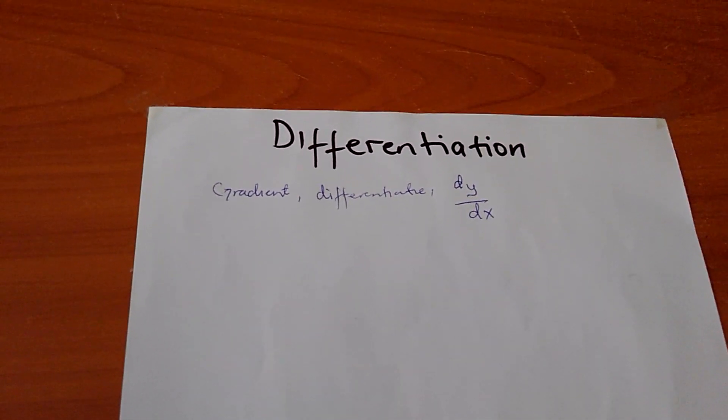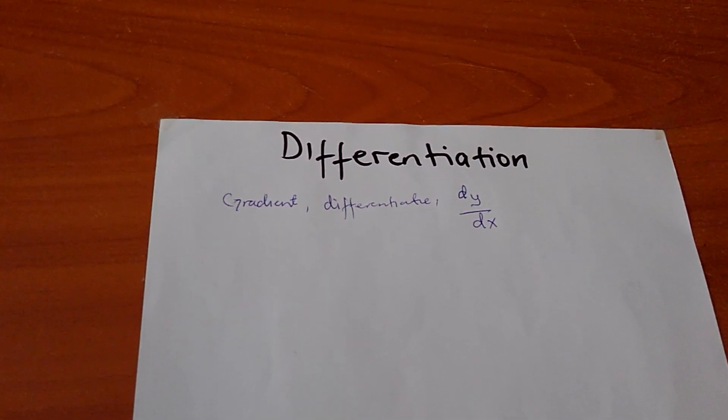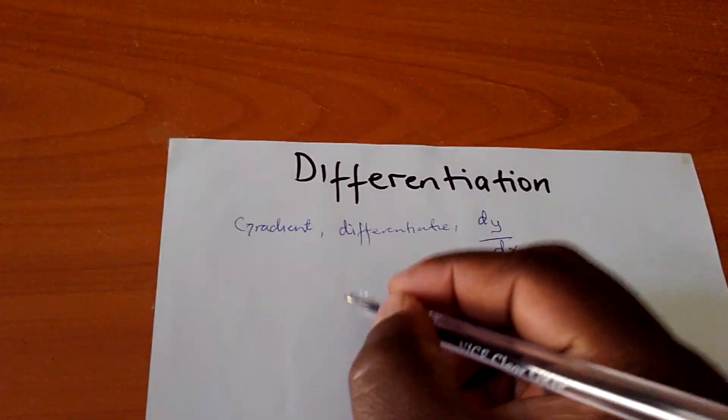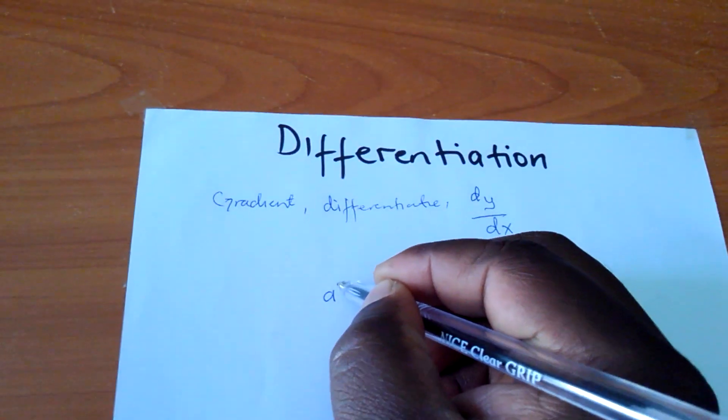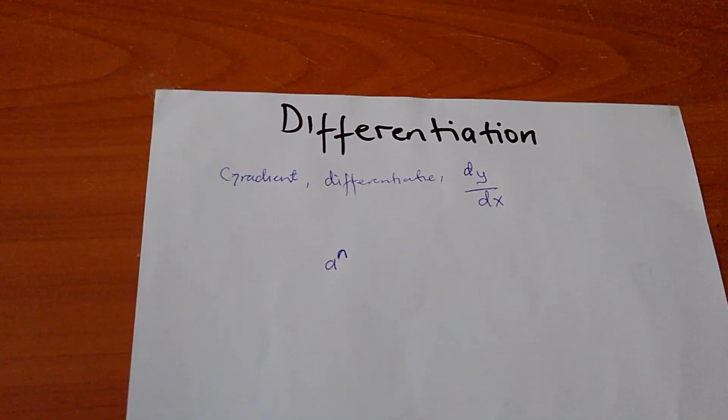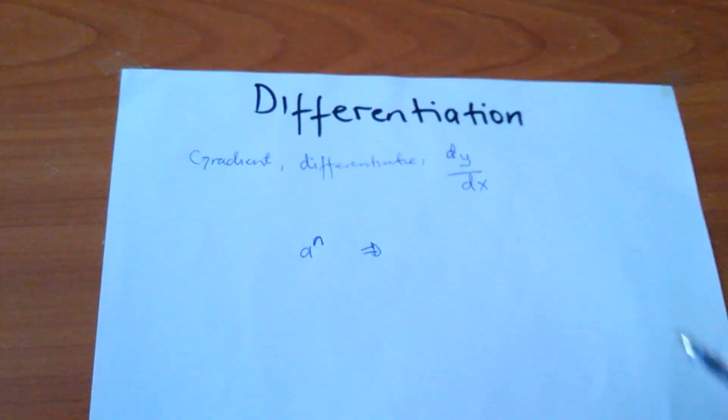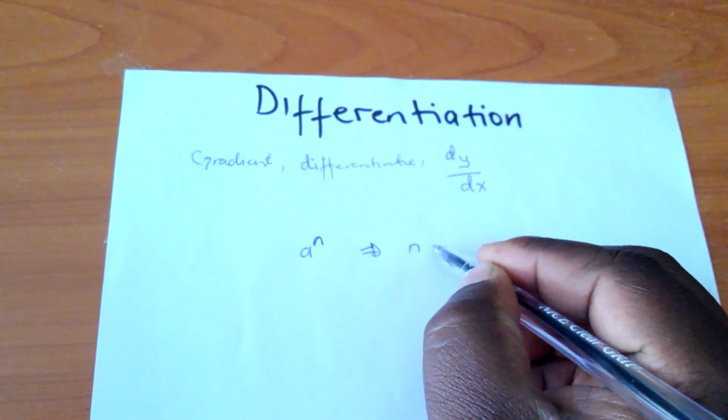Now, before I go further, I would like to explain what is meant by differentiating. If you are differentiating, take for example, if I have something, let me say, a to power n, and I say differentiate, all I mean is I have to multiply n times a.